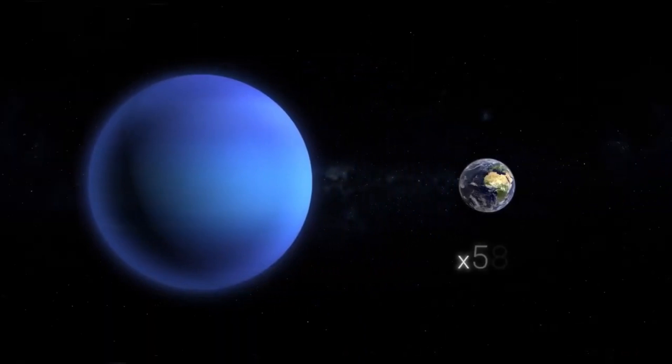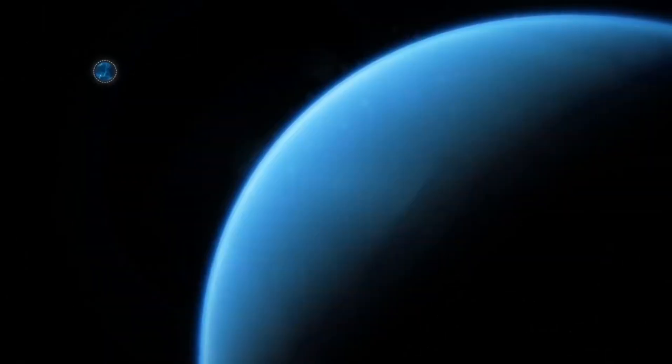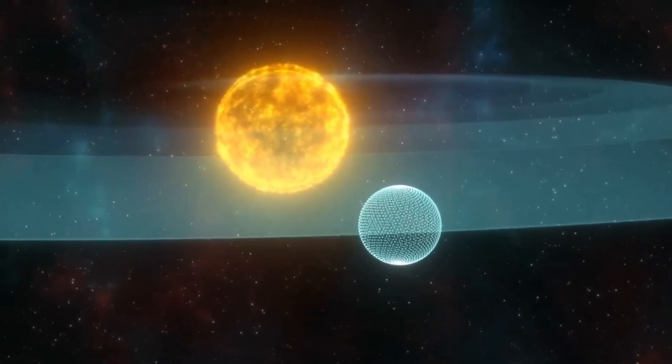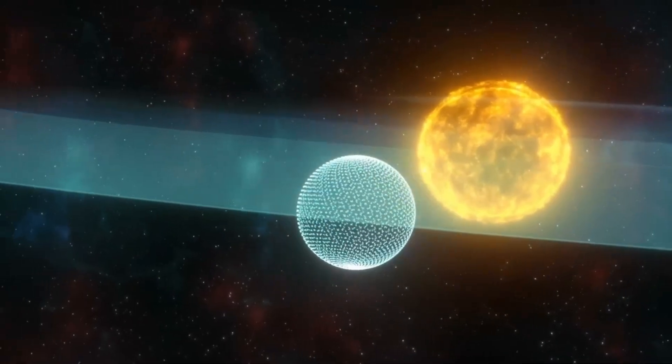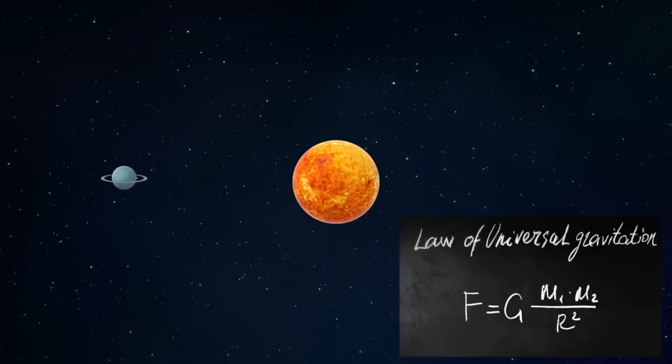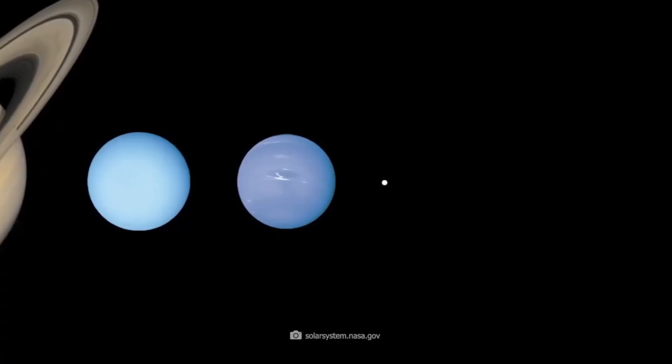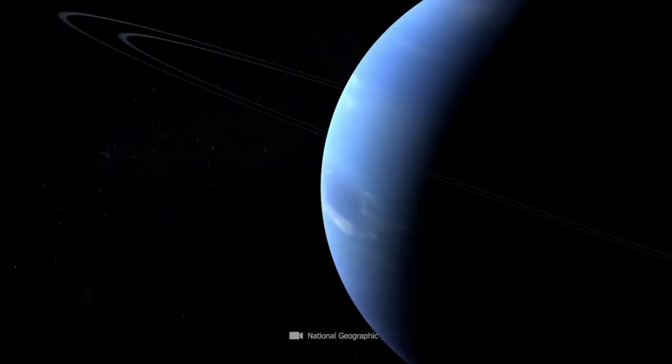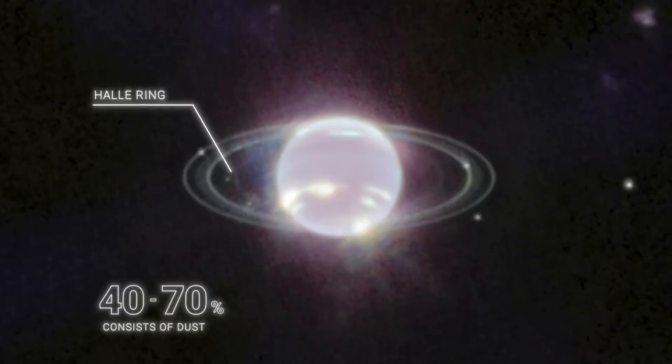Pluto's journey around the Sun is unlike any other planet in our solar system. It takes a staggering 248 years to complete a single orbit, meaning since its discovery in 1930, it hasn't even finished one full revolution. Pluto's path is marked by its highly elliptical shape, deviating significantly from the nearly circular orbits of the major planets. What makes Pluto's orbit even more peculiar is its inclination, angled 17 degrees to the ecliptic plane.